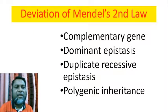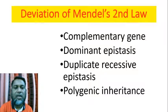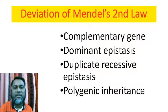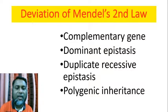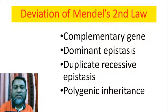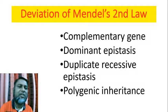There are many deviations such as complementary gene, dominant epistasis, duplicate recessive epistasis, and polygenic inheritance. In a previous lecture, I discussed complementary gene. Today I discuss dominant epistasis. In next classes, duplicate recessive epistasis and polygenic inheritance will be discussed.